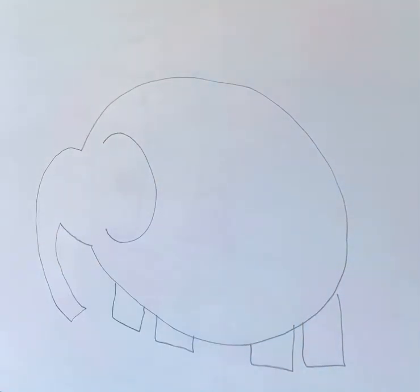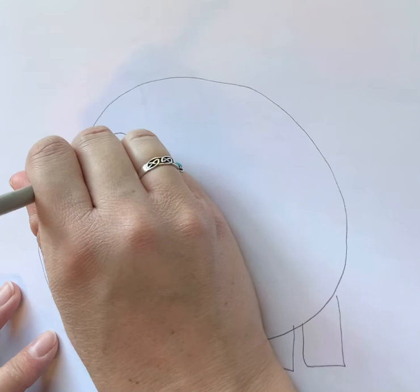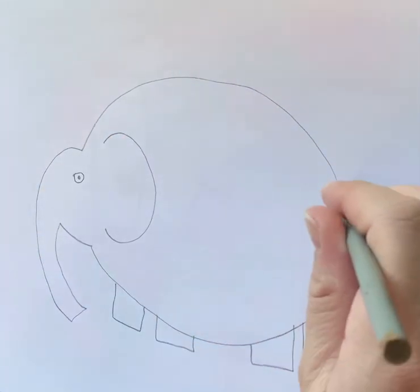Add a circle for the eye and a triangle shape for the tail.